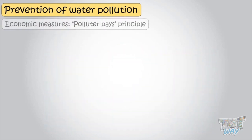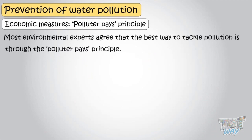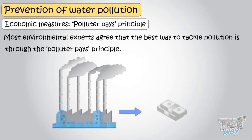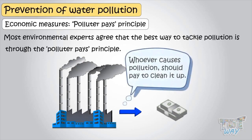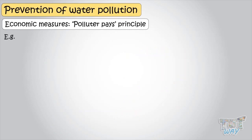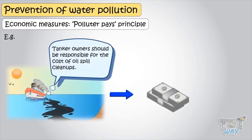Now let's learn some economic measures to prevent and reduce water pollution. Most environmental experts agree that the best way to tackle pollution is through something called the polluter pays principle. This means that whoever causes pollution should have to pay to clean it up, one way or another. For example, tanker owners should be responsible for the cost of oil spill cleanups.